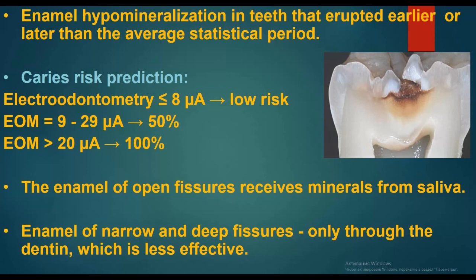The enamel of open fissures receives minerals from saliva. Enamel of narrow and deep fissures receives minerals only through the dentin, which is less effective.